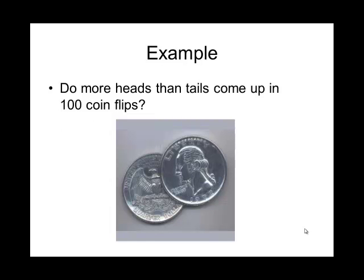As an example, you might be wondering if you flipped a coin 100 times, do more heads appear than tails? All we're talking about is coin flipping, and there's two possible outcomes or two possible groups here. We have the heads and the tails. If you flip it 100 times, you're going to have a count of how many times the head comes up and how many times the tail comes up.